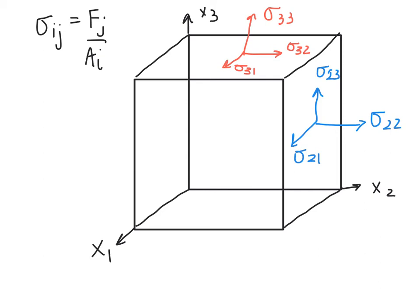And finally, we can consider the stresses on the 1 face. So, this normal stress is sigma 11. This shear stress on the 1 face in the 2 direction is sigma 12, and this other shear stress on the 1 face in the 3 direction is sigma 13.